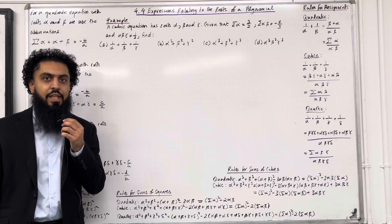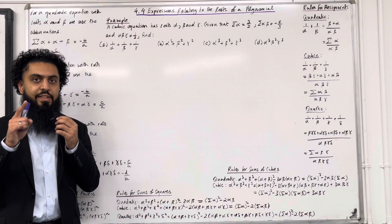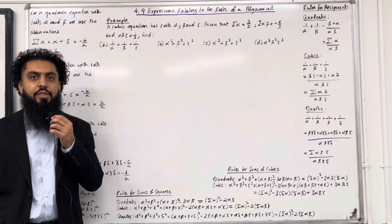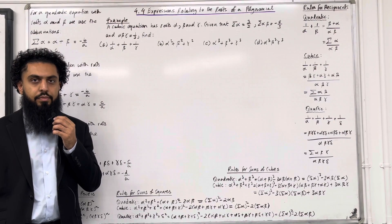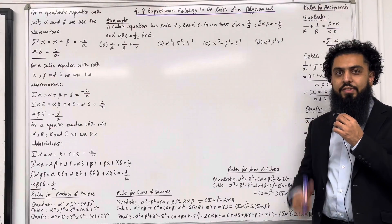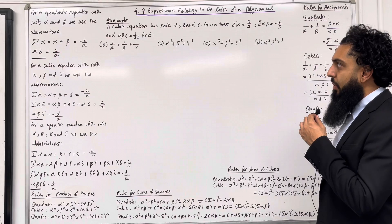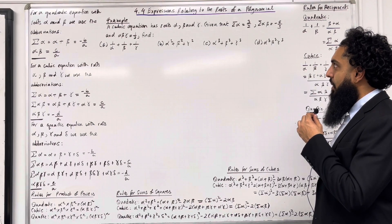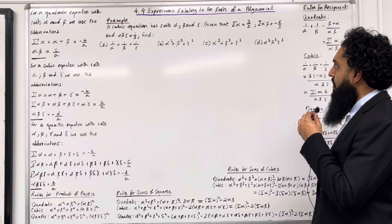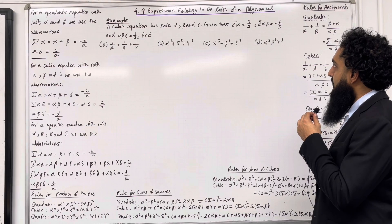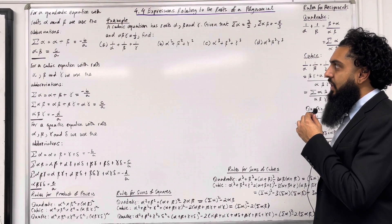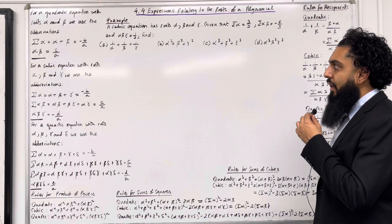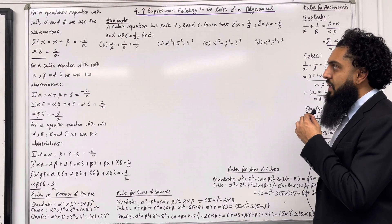I'll be implementing these key facts within one example and two exam style questions. Here is an example. A cubic equation has roots alpha, beta and gamma. Given that sum of alpha is equal to 3 over 2, sum of alpha beta is equal to minus 4 over 3 and alpha beta gamma is equal to 1 over 2. Find part A: 1 over alpha plus 1 over beta plus 1 over gamma.